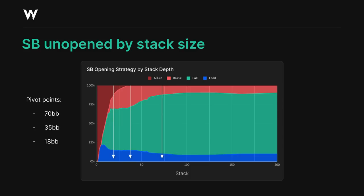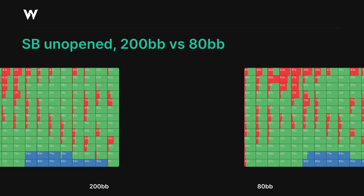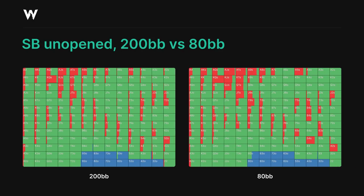Let's take a look at some of our strategies as we pass these pivot points, and identify where the shifts in our approach are occurring. First, here's our strategy for 200 big blinds compared to 80 big blinds, to illustrate how these two stack sizes are actually virtually identical in terms of how we should approach them.